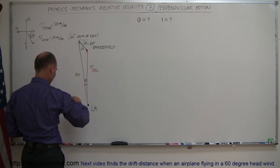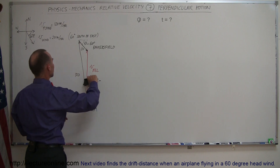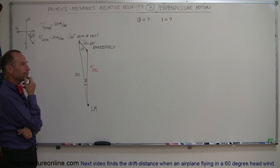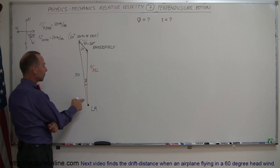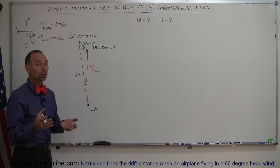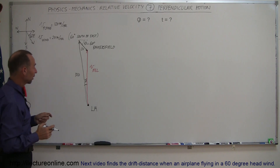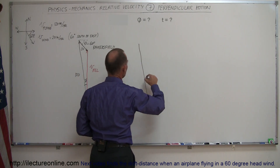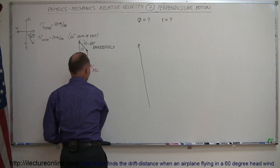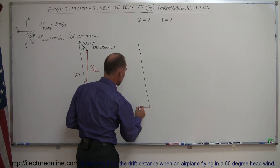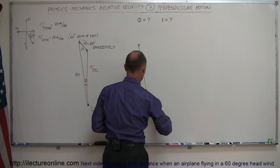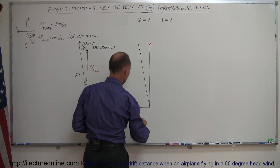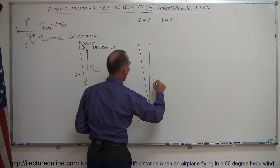To find the relative velocity, we first need to find the angle — let's call it phi, since theta is already used. The vector representing the speed of the plane has two components: a vertical component and a horizontal component. So we can label these v of the plane in the x-direction and v of the plane in the y-direction.